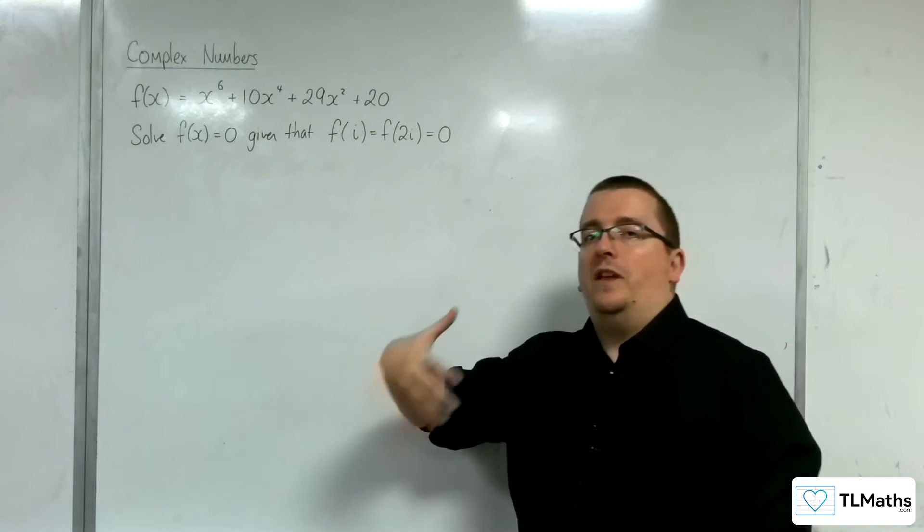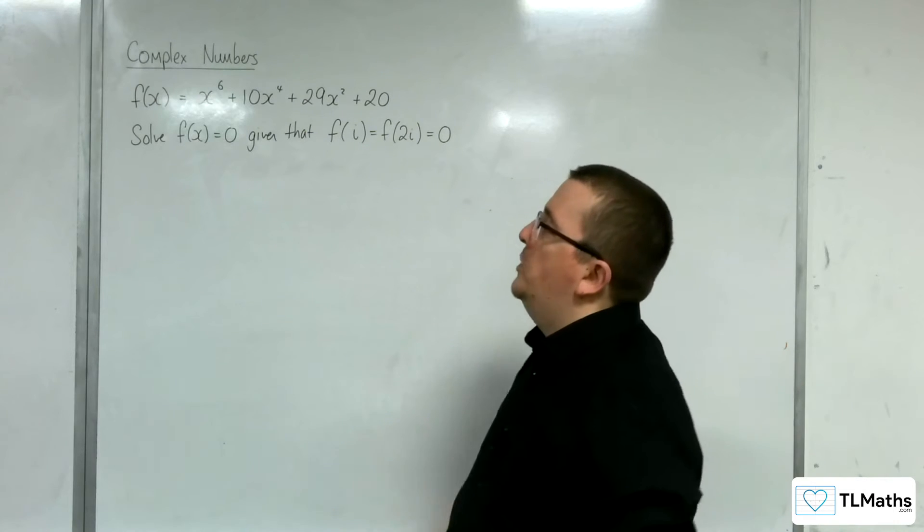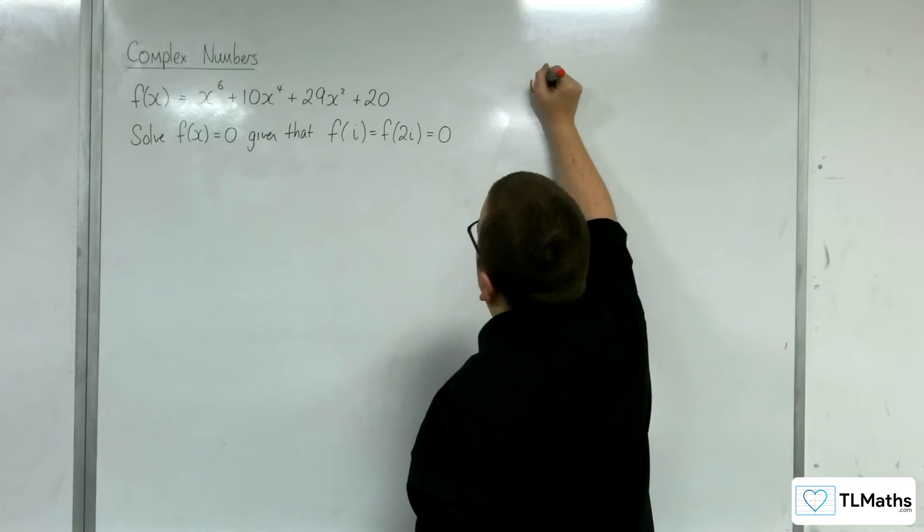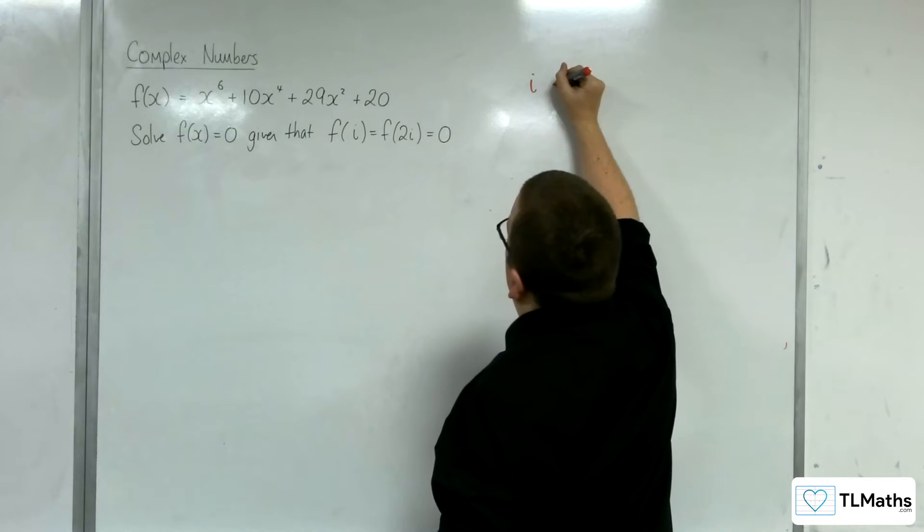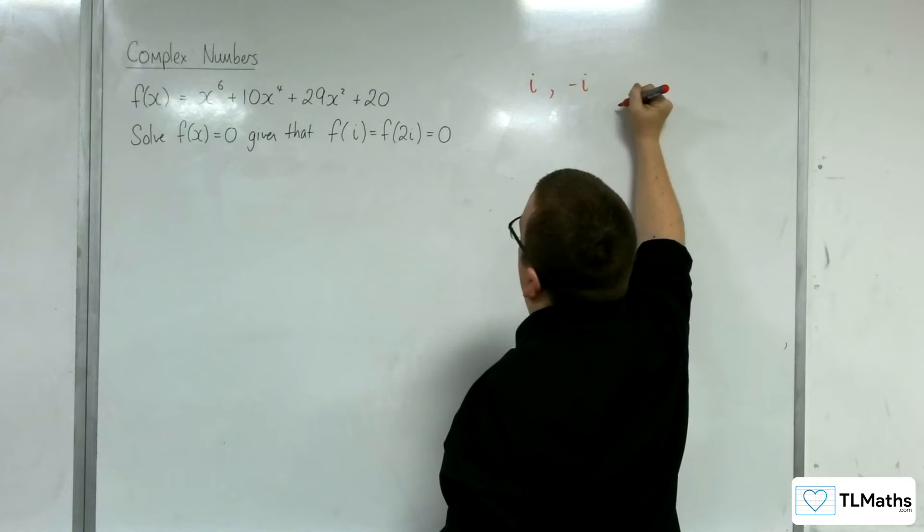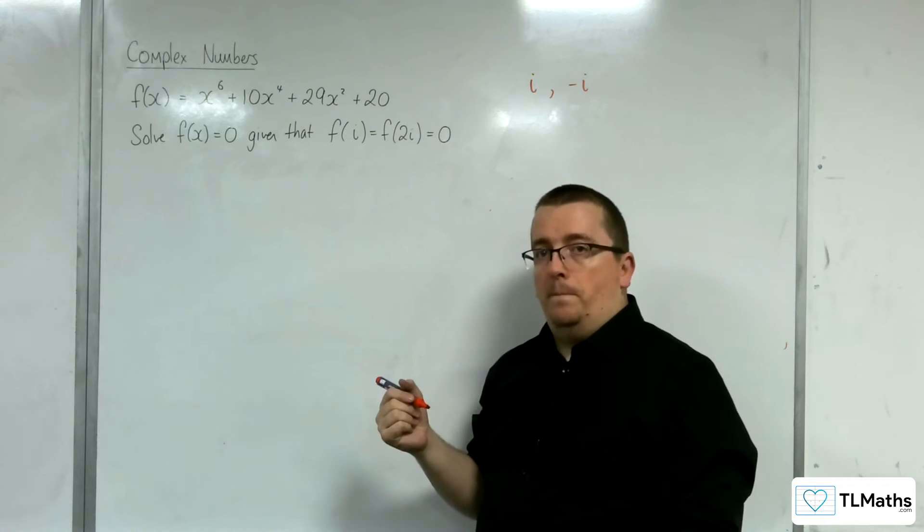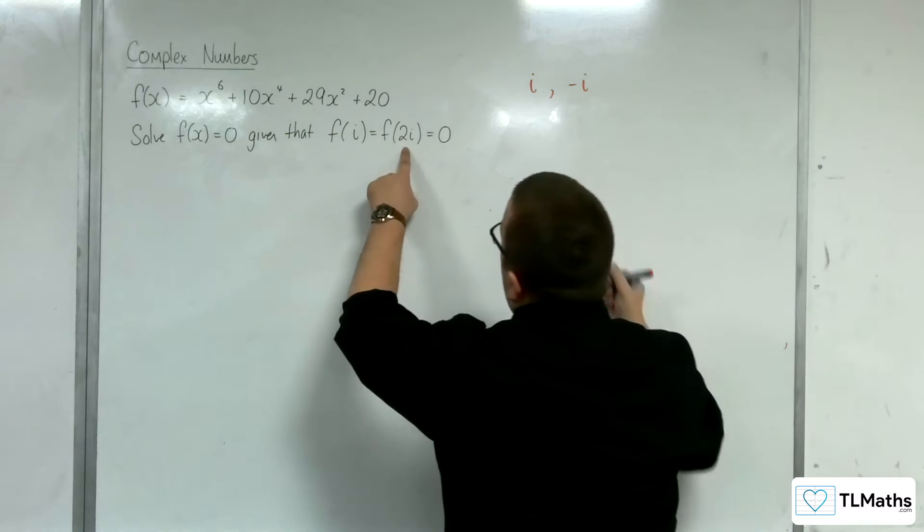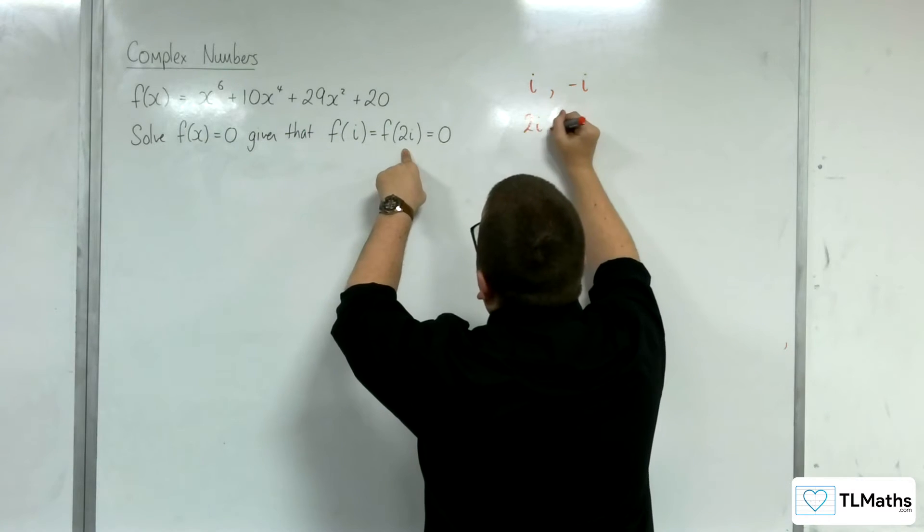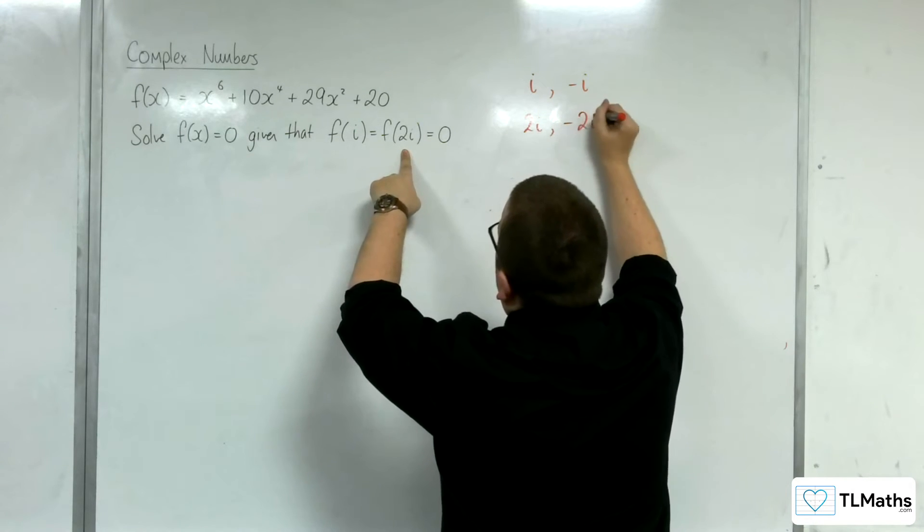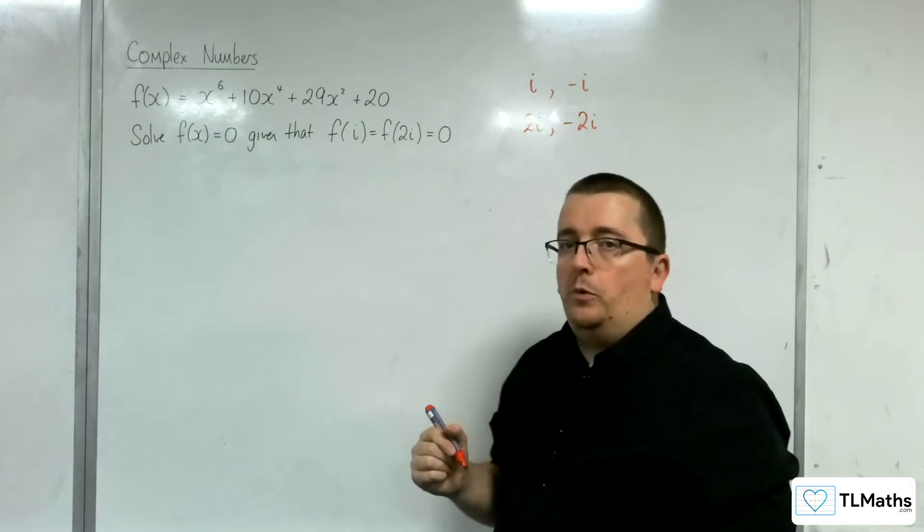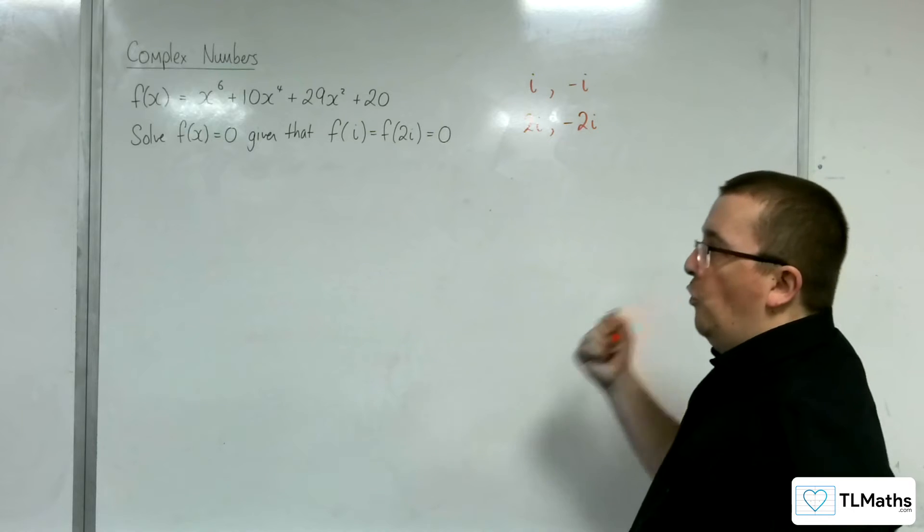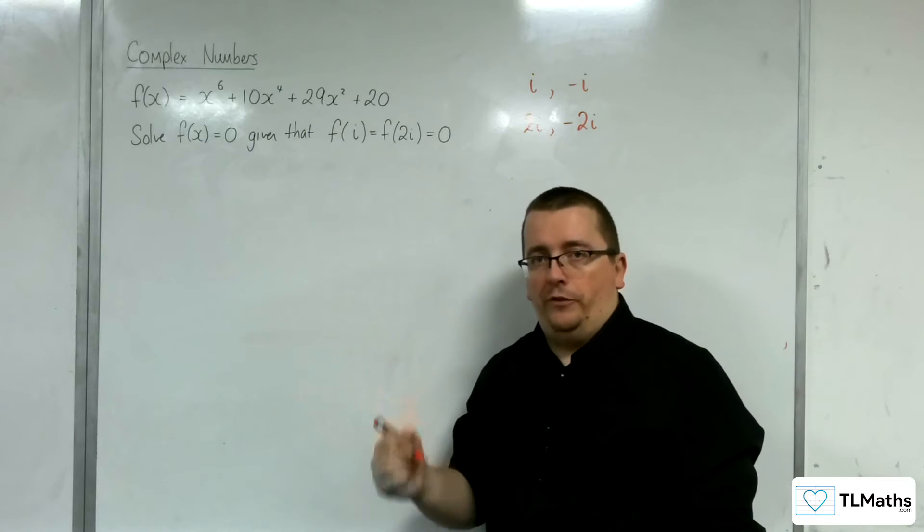Now, we haven't got to complex conjugates yet because I'm introducing a little bit more information here. But i is a solution implies that minus i is also a solution. Likewise, because I know that 2i is a solution, that means that minus 2i is also a solution.